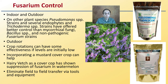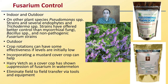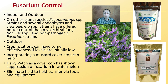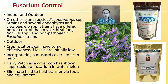Crop rotations have some effectiveness if fusarium levels are initially low when first identified. Incorporating mustard cover crop can help, but if you identify it specifically as fusarium, you might want to look at the cover crop called hairy vetch, which has shown suppression of fusarium in fields planted with watermelon. To eliminate field-to-field transfer via tools and equipment, make sure you're not transferring soil between fields. Plant hairy vetch for nitrogen benefit as well as fusarium suppression.